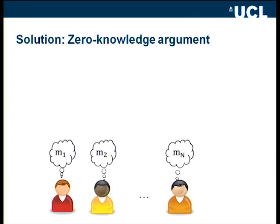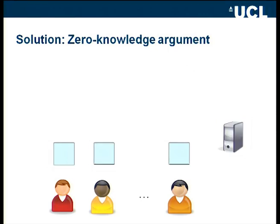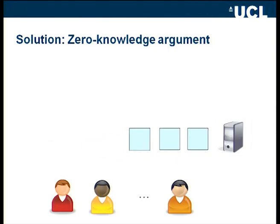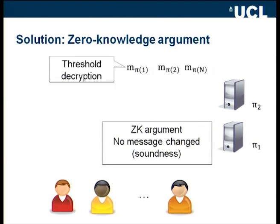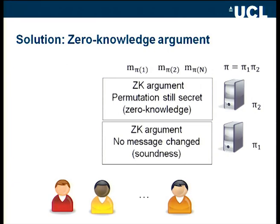To prevent this, we force all mix servers to send together with the output ciphertexts a zero-knowledge argument. If the next mix server accepts this, we know no message was changed because a zero-knowledge argument should be sound. After decryption we know all messages are the same as input into the mixnet, and the permutation remains secret because we use a zero-knowledge argument — pi_1 and pi_2 are still secret.